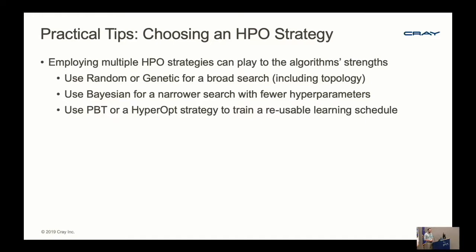It's not uncommon to mix and match HPO strategies. You can do a hierarchical search—for example, start with a random or genetic search for a broad search including your topology, then switch over to a Bayesian search when you've locked in some initial hyperparameters and only want to tune a smaller number. Things like PBT and Hyperband, because they have early stopping, cannot be used for topology search. Once you have your topology locked in, it can make sense to switch to PBT or Hyperband to acquire a reusable learning schedule.